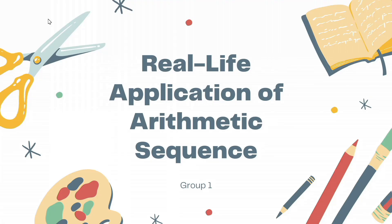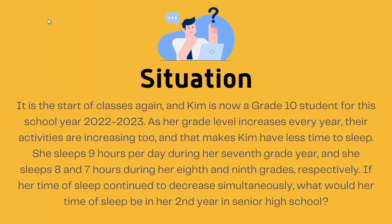After watching the video, let's now solve a real-life application of arithmetic sequence. The situation is: It is the start of classes again, and Kim is now a grade 10 student for school year 2022–2023. As her grade level increases every year, her activities increase too, giving her less time to sleep. She sleeps 9 hours per day during grade 7, and 8 and 7 hours during her 8th and 9th grades respectively. If her sleep time continues to decrease at the same rate, what would her sleep time be in her 2nd year in senior high school?